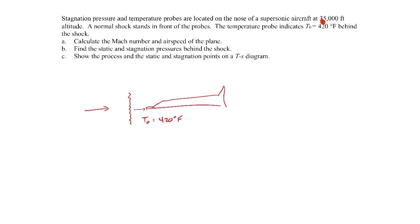We can do that by looking up the temperature and pressure at that altitude using a U.S. standard atmosphere table. This is something we talked about early in the course when we were discussing hydrostatic pressure in the atmosphere. If you do that, you'll find that the pressure P1 is 3.458 pounds per square inch absolute, and T1 is 393.9 degrees Rankine. Notice both of those are absolute quantities — absolute pressure and absolute temperature.